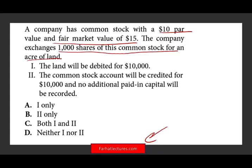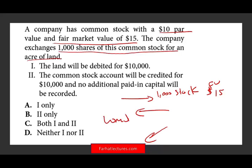Let's visually see what happened. The company gave up 1,000 stocks; the fair value of each stock is $15. In return, they got a piece of land. They don't tell us the value of the land — it's an acre of land — but they told us the value of the stocks. The question is: will the land be debited for $10,000? What they're asking is, do you know what journal entry to make? The entry would be: debit land, credit common stock, and credit additional paid-in capital. Debit land for a certain amount, credit common stock for the stock issued, and the remainder is paid-in capital.